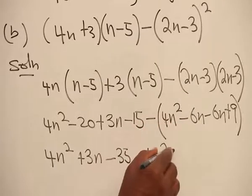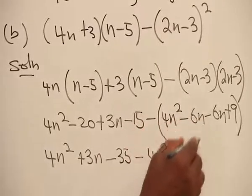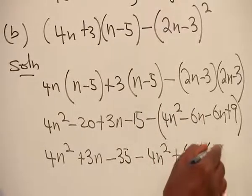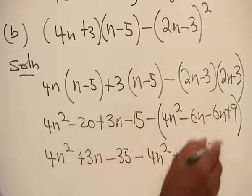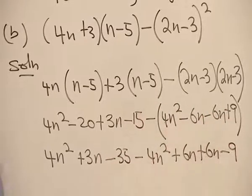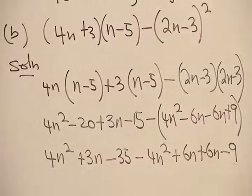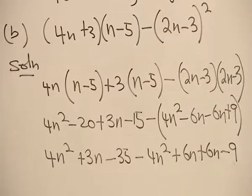Minus and minus becomes plus 6n. Again, another plus 6n and then plus. This time around, minus and plus is minus. No need for a bracket again. We have opened all the brackets. What is left is to simplify.